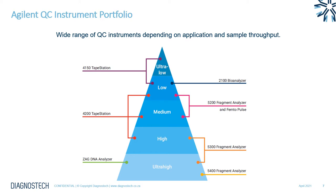Before getting into details on each TapeStation system, here is where they fit into the Agilent QC portfolio. Agilent has a wide range of QC instruments depending on your application and sample throughput. At the ultra-low throughput end, the 4150 TapeStation allows analysis of 1 to 16 samples. The 2100 Bioanalyzer is a well-known instrument for electrophoresis, allowing up to 12 samples. On the higher end are instruments such as the Fragment Analyzer and FemtoPulse, and then the 4200 TapeStation, which is highly flexible and allows 1 to 96 samples depending on the lab's capacity. At the high and ultra-high end are the 5300 and 5400 Fragment Analyzer systems — highly automated and scalable instruments allowing thousands of samples per day — and the ZAG DNA Analyzer, a highly automated electrophoresis system focused on qualitative data.